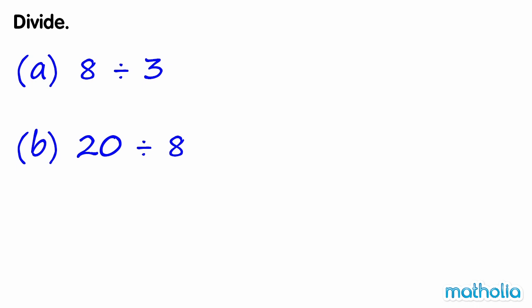Divide. A. Eight divided by three is equal to eight thirds. Eight thirds is an improper fraction, which we can express as the mixed number two and two thirds. So eight divided by three is equal to two and two thirds.